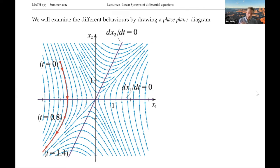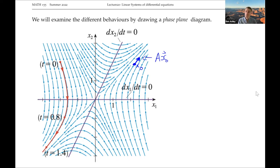In a phase plane diagram, we have arrows which describe how the population is changing at any given point. If you are at a point x0, the arrow there describes how the population is changing at that time - it represents the vector Ax0. We can draw any trajectory we like just by following those arrows from any starting point.